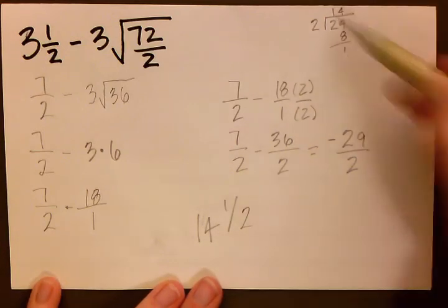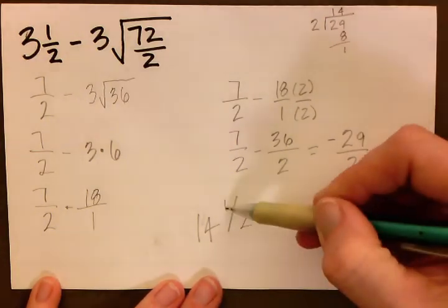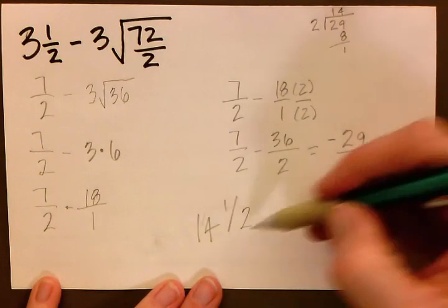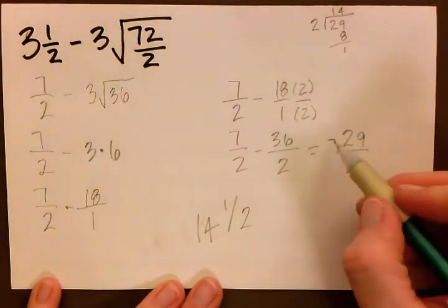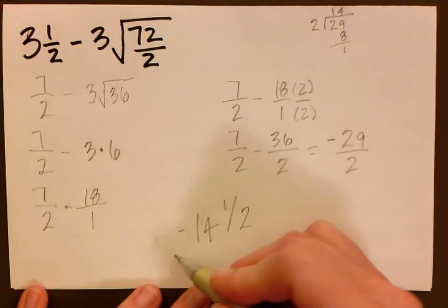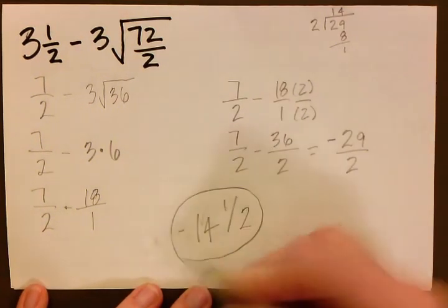14 is our answer. 1 is the remainder which goes into the numerator. 2 is the divisor which goes into the denominator. And we have to remember that it was a negative. So it's negative 14 and 1 half is the final answer.